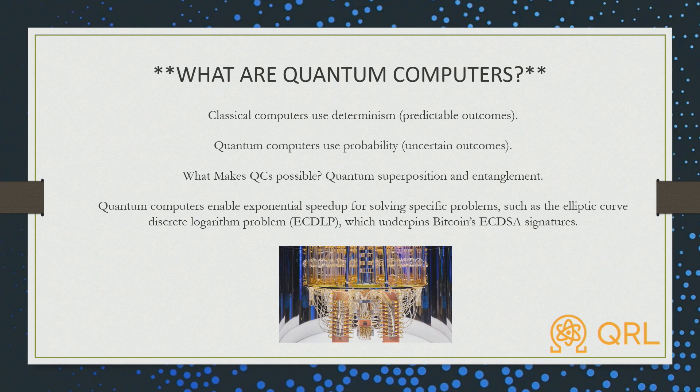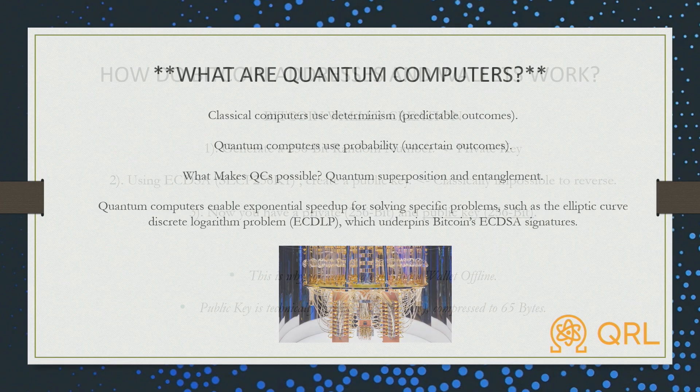Quantum computers enable an exponential speedup for solving specific problems, such as the elliptical curve discrete logarithm problem, which underpins Bitcoin's ECDSA. We will get into that a little bit more.